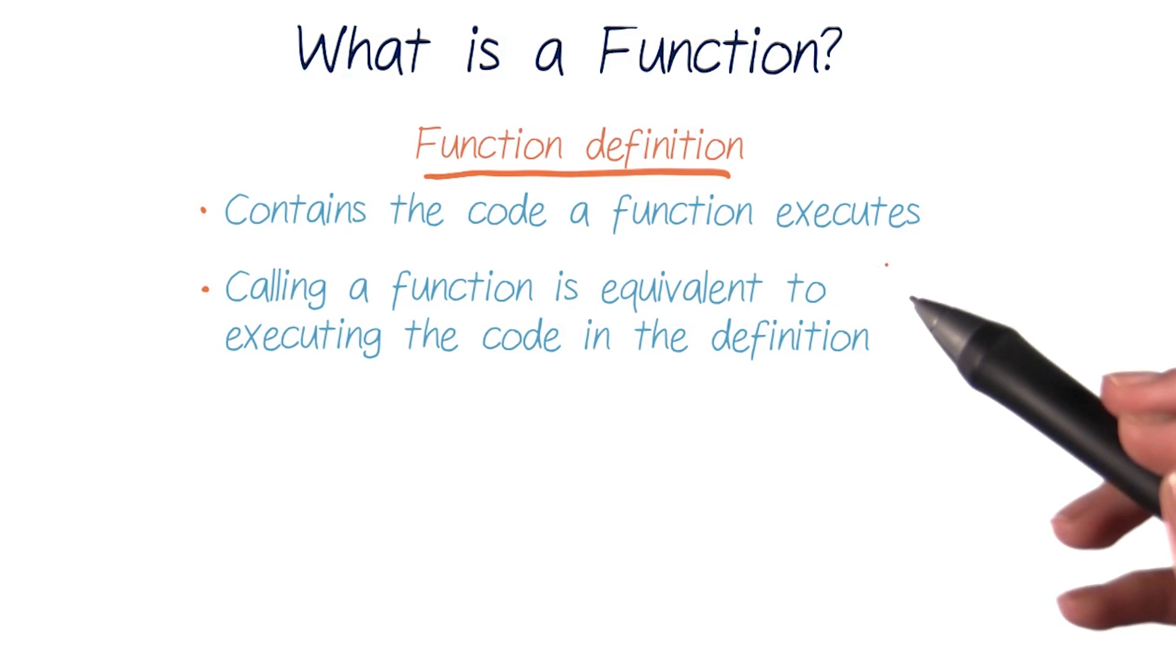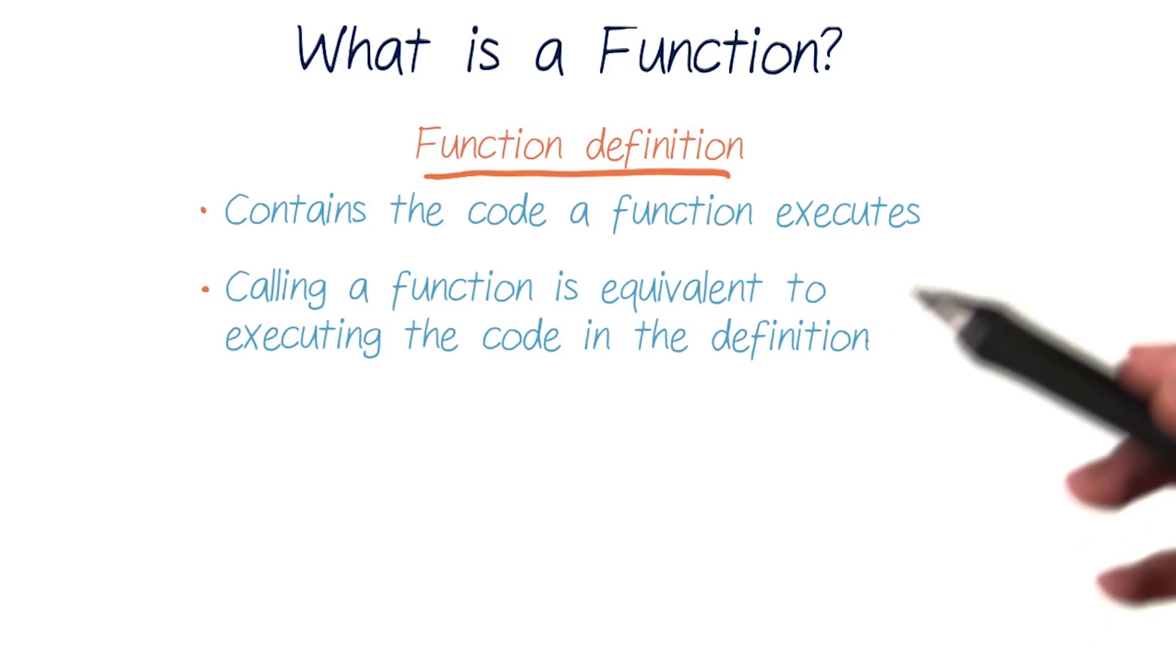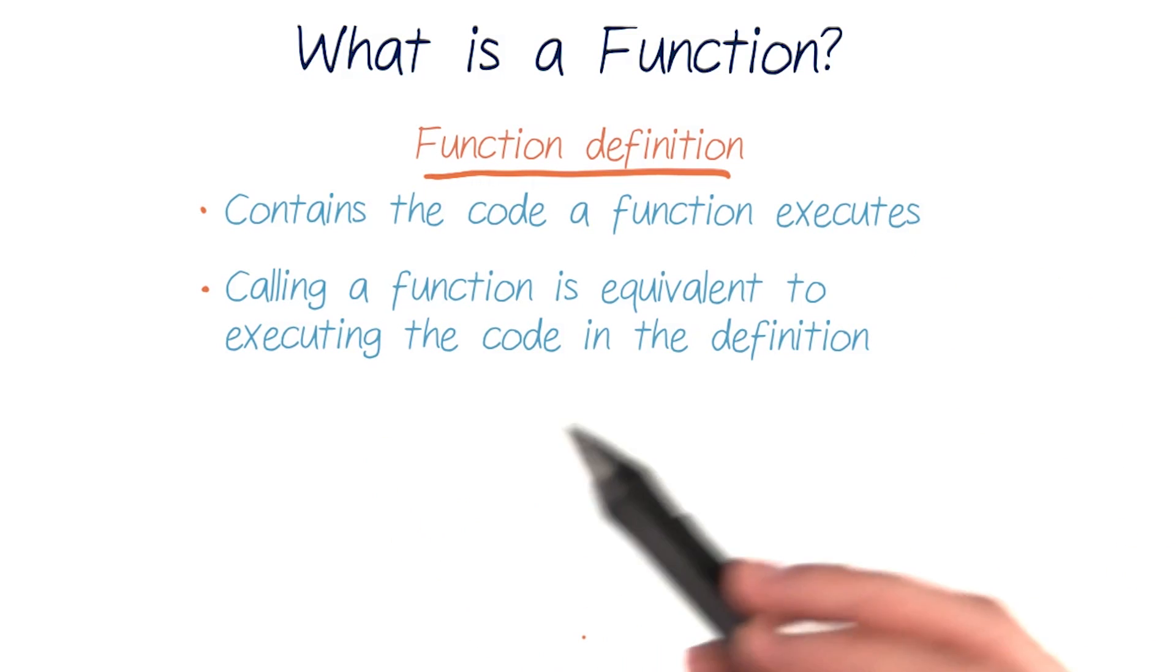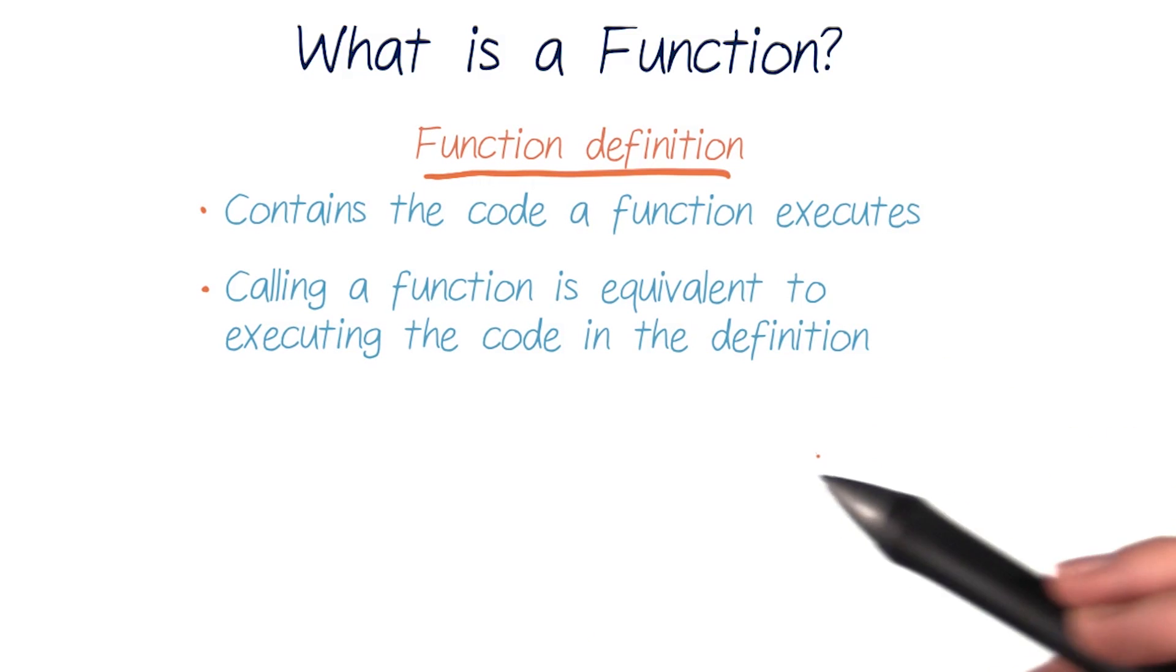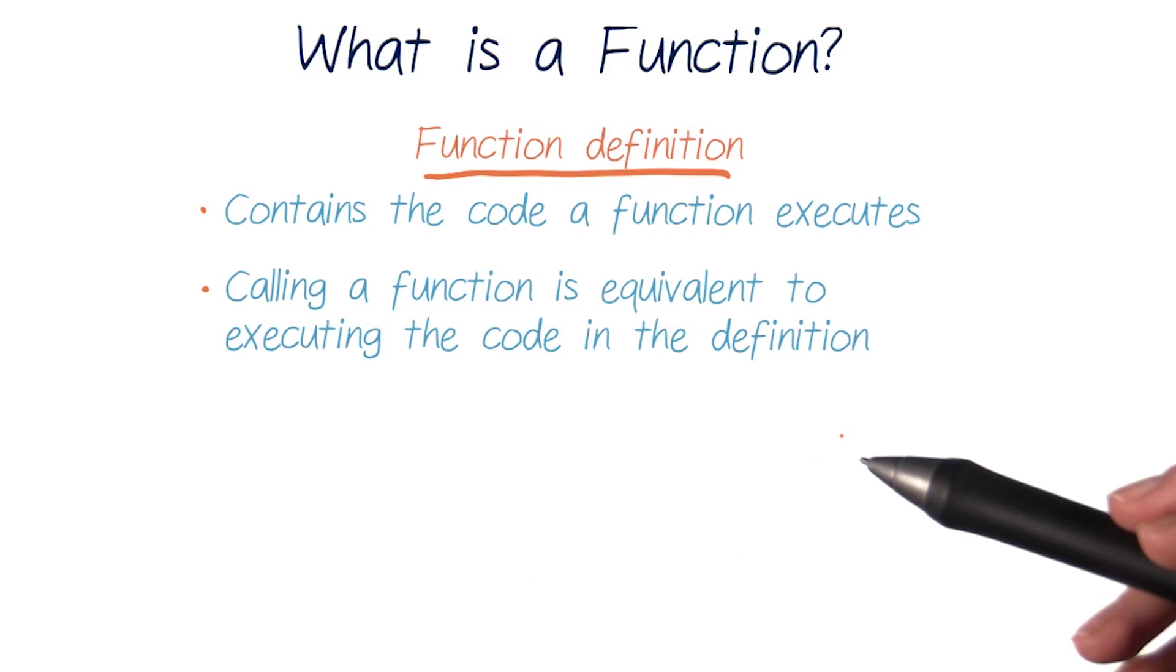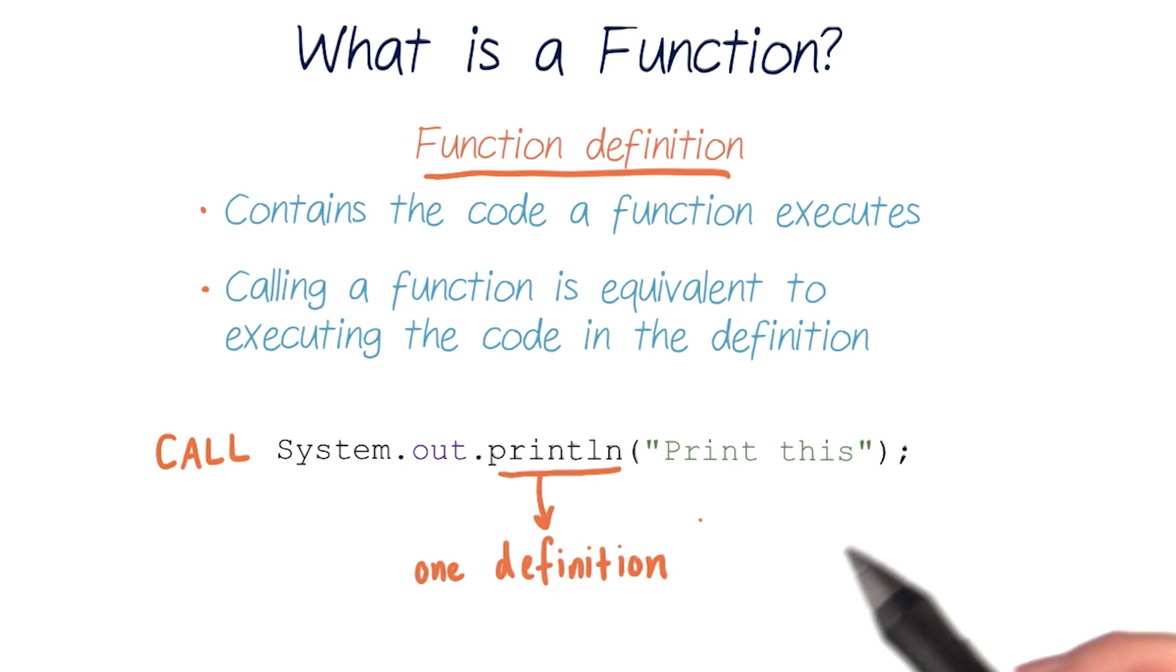Function definitions include the name of a function and all the code that function contains. When you call a function, like when you say system.out.println, it's equivalent to executing all the code in the definition of println. So when you call println over and over again, all these calls will refer to the same one function definition.